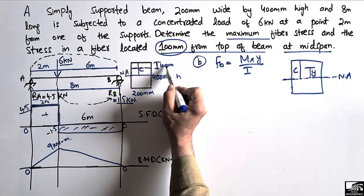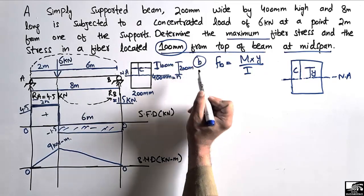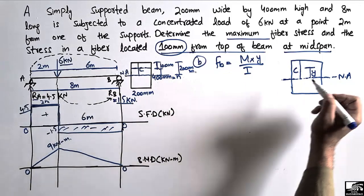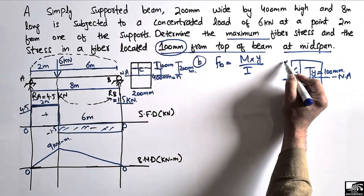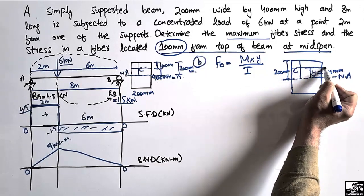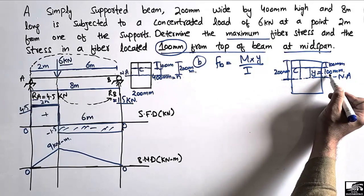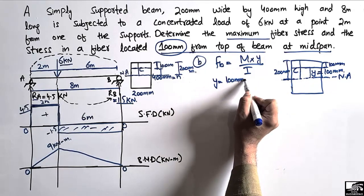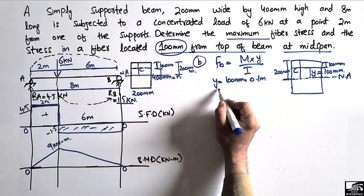The point is 100 mm from the top. The half-depth of the beam is 200 mm from the neutral axis. So the distance from the neutral axis to this point is 200 minus 100 equals 100 mm. Therefore y equals 100 mm or 0.1 meter. The moment M at mid span is the remaining unknown.